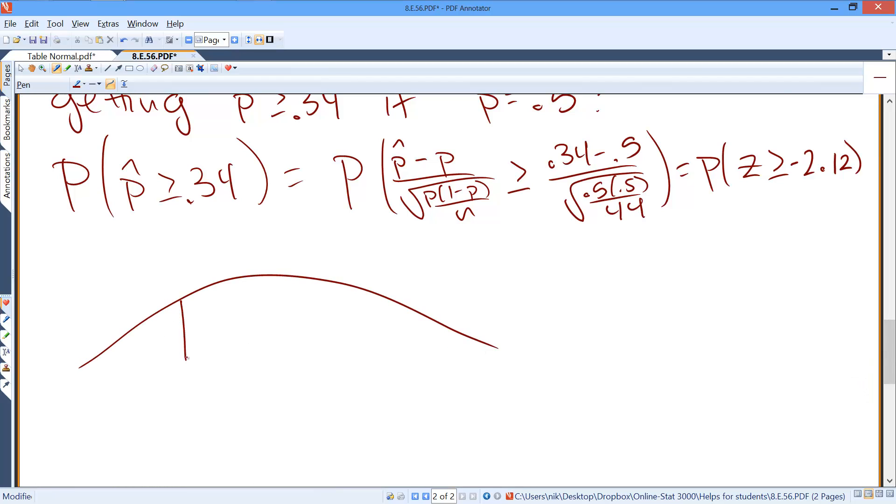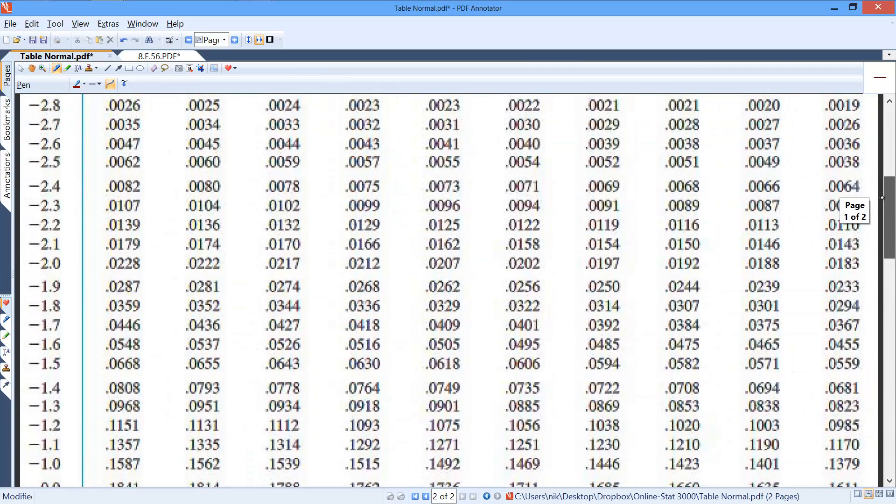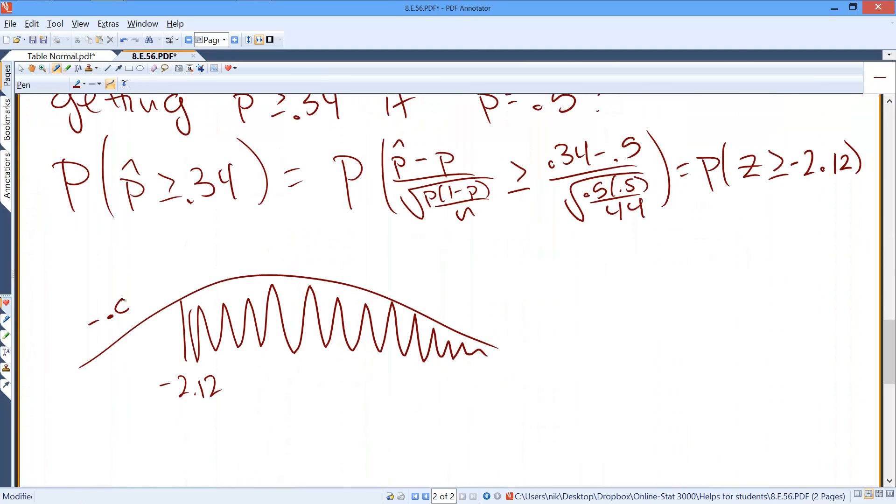So here we are at negative 2.12, we're looking for the area to the right. So if I look at negative 2.12 on my table, looks like we're at 0.017. And we'll notice that the area to the right is 0.983.